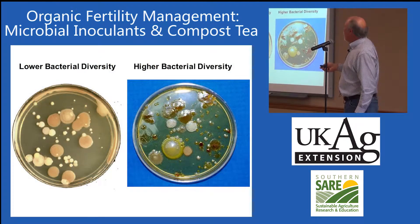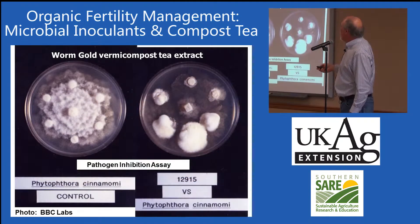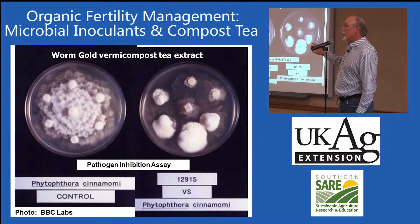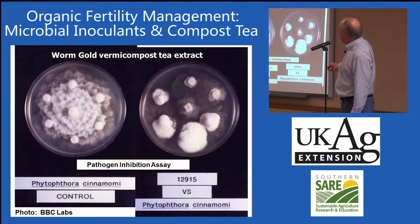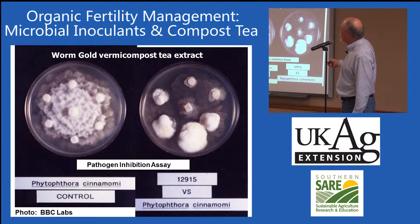Just as an example of low versus high bacterial diversity — here's a good one. This is an outfit in California that was doing worm compost, it was Worm Gold. It was some work that George Hahn had done. This is a pathogen inhibition assay — a petri dish with the pathogen Phytophthora cinnamomi infected in the middle, and the cotton swabs on the outside were just treated with water, so the pathogen was able to grow across the petri dish wherever it wanted.